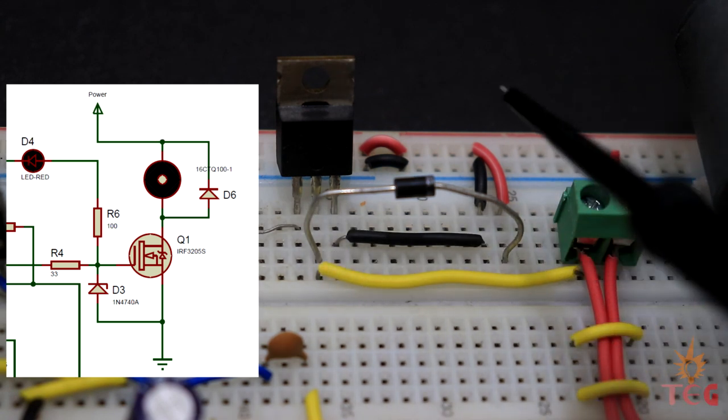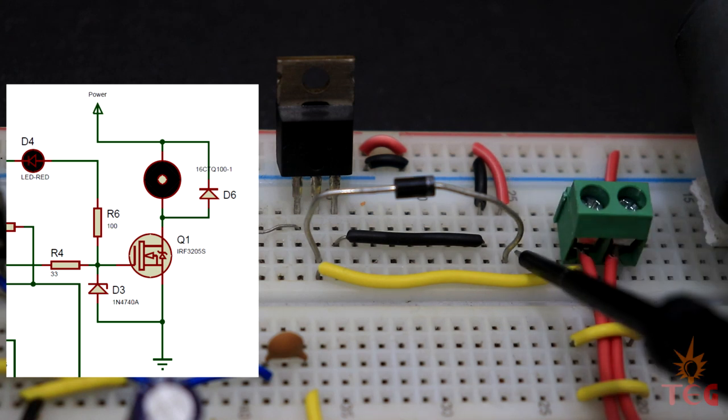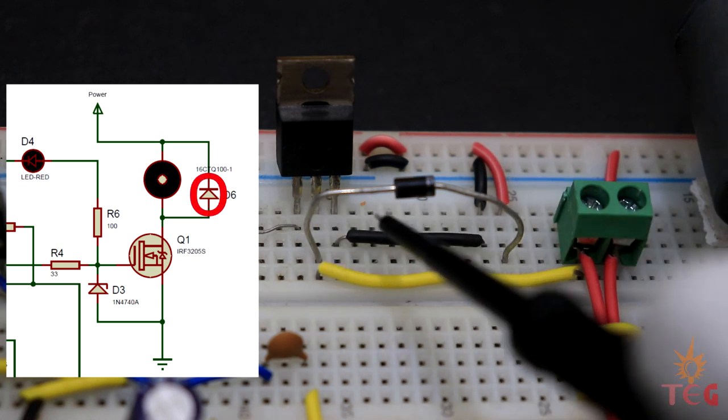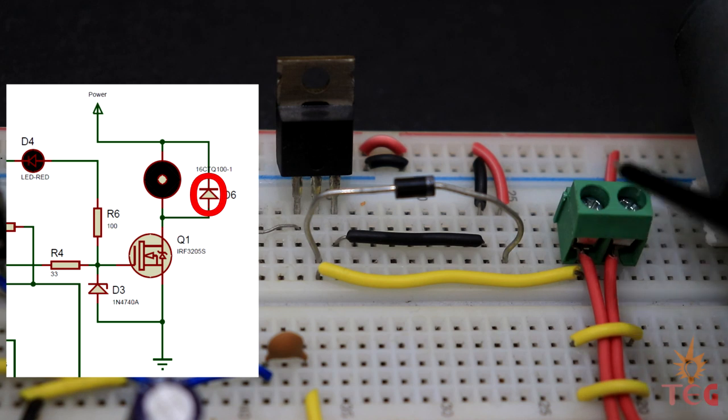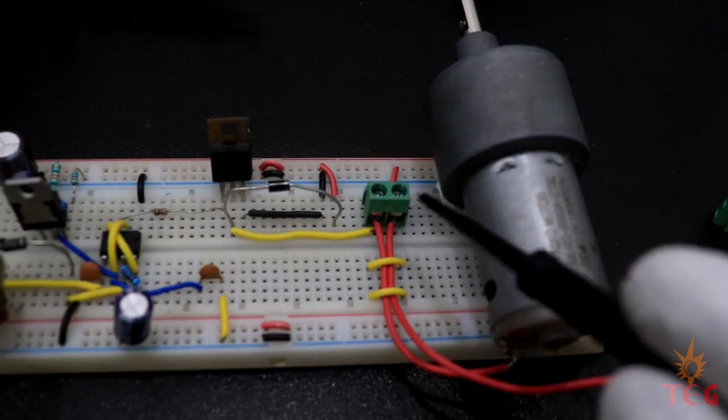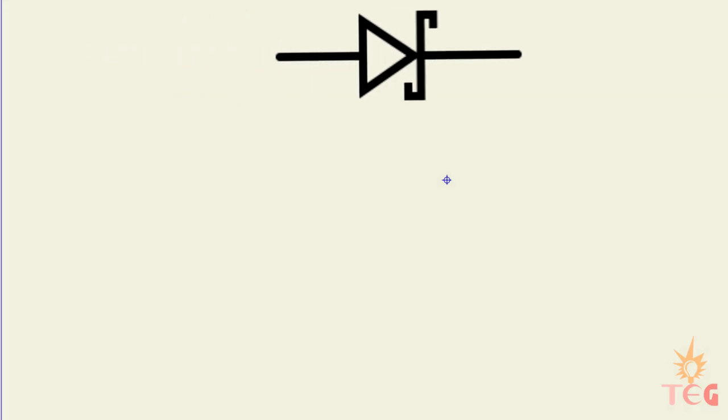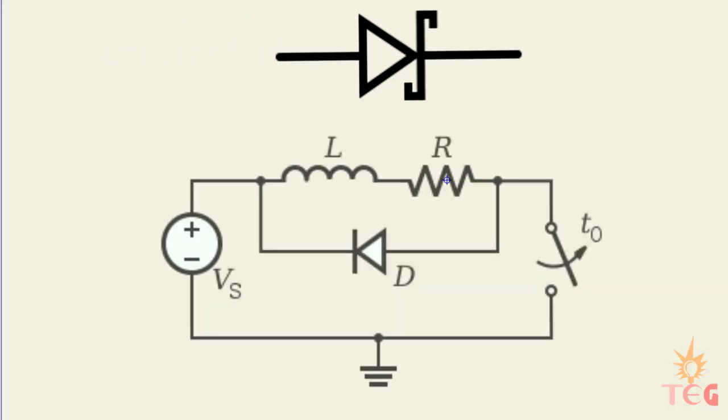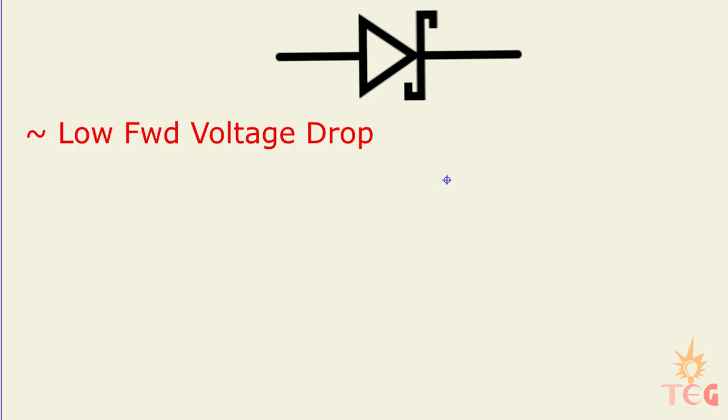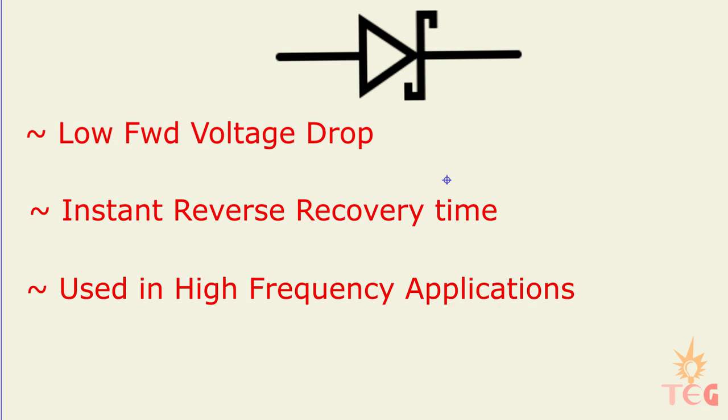Now to protect the MOSFET from voltage spikes caused by the motor, a Schottky diode is connected across the motor or between drain and positive of the 12 volt supply. Schottky diodes are generally preferred in flyback diode applications because they have the lowest forward drop and are able to quickly respond to reverse bias. In other words, Schottky diode have effectively instant reverse recovery time, hence suitable for high frequency applications.